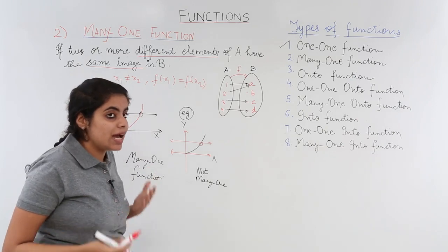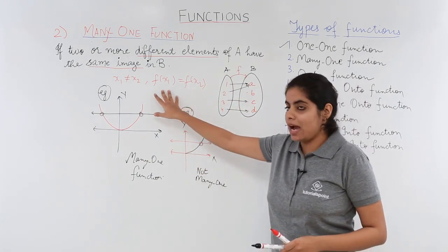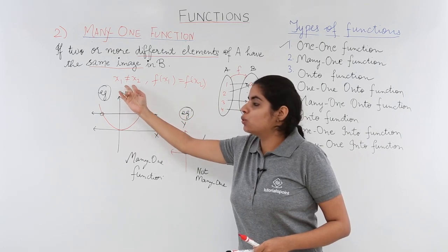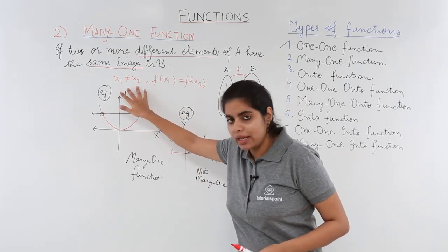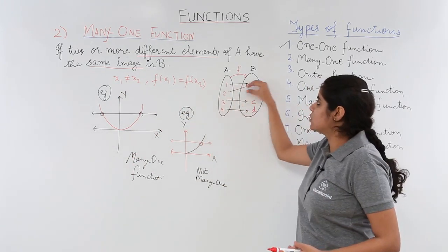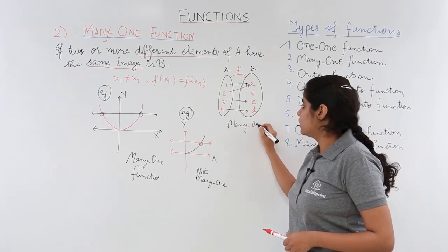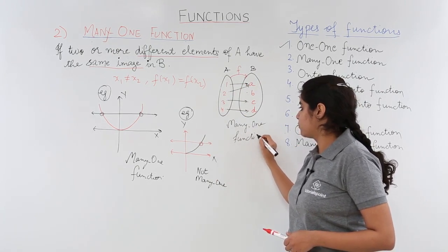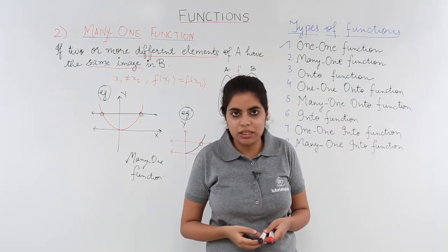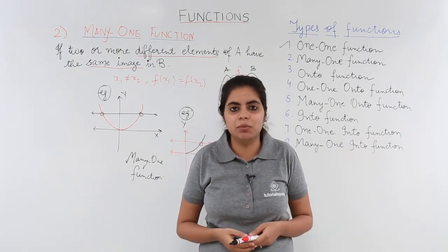The mapping is shown such that 1 and 2 have the same image, which is a. As per the definition of many-one function and the mathematical statement we had seen, the two different elements had the same image. Same is the case here: 1 and 2 are different, but the image they have is the same, so this is an example of a many-one function. In this video, we basically saw what we mean by a many-one function and also saw some graphical analysis and arrow diagram for the same.